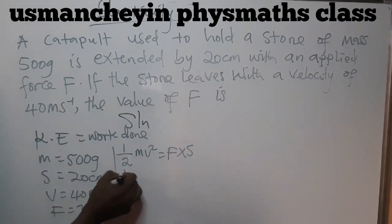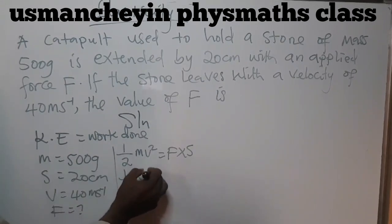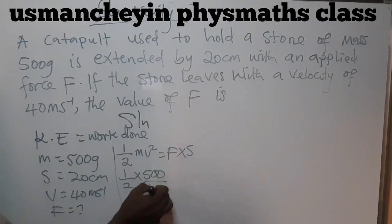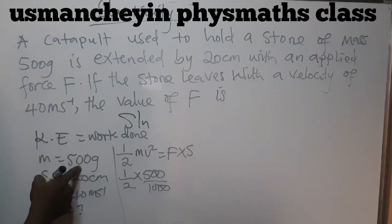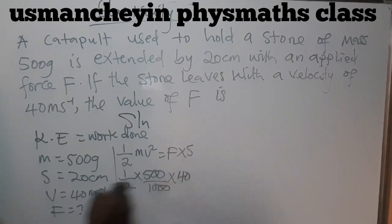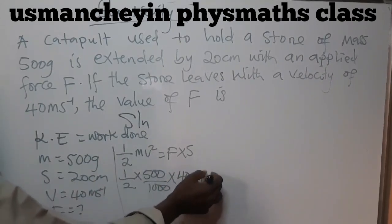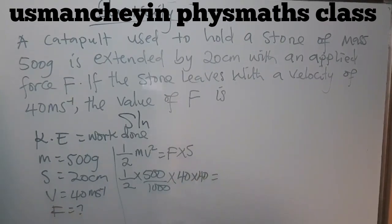Half multiplied by the mass is 500. I will divide it by 1000. If you ask me why, I will tell you we are converting it from grams to kilograms. Multiplied by v, which is 40, but the v is squared, so it will be 40 multiplied by 40 or 40 squared.